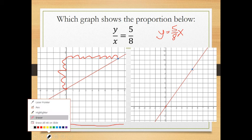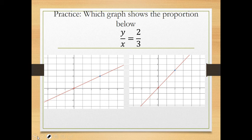Pause the video and see which graph represents this proportion. The answer is the one on the left. The rate of change or slope of that line is 2/3 — to get from one point to the next, go up 2 and to the right 3. We can clearly see another point lands on that line, confirming the option on the left.